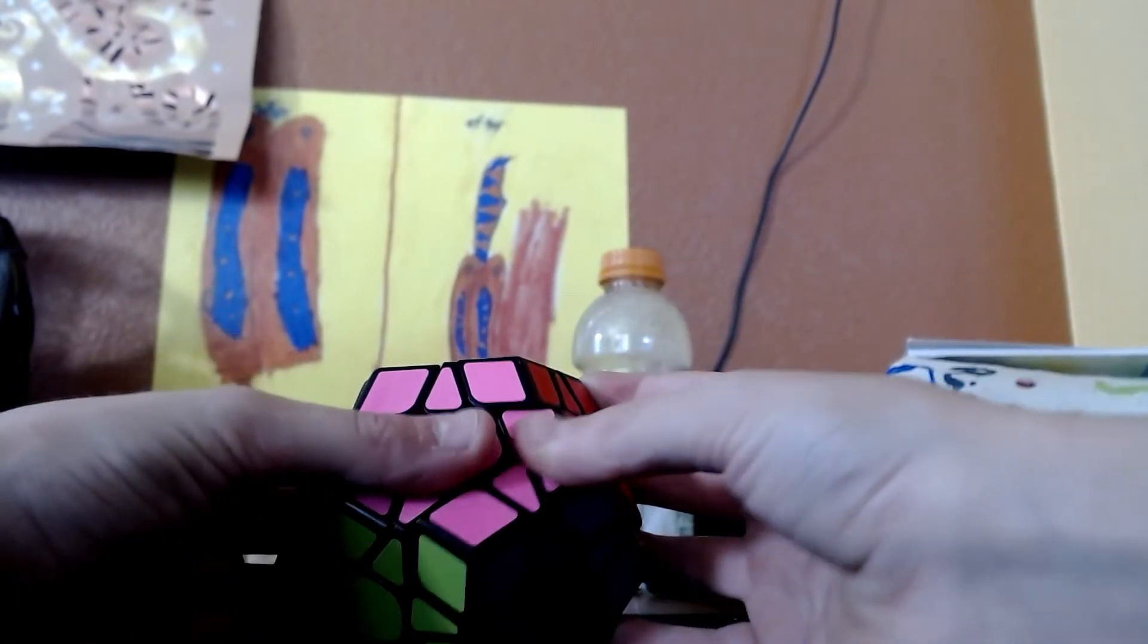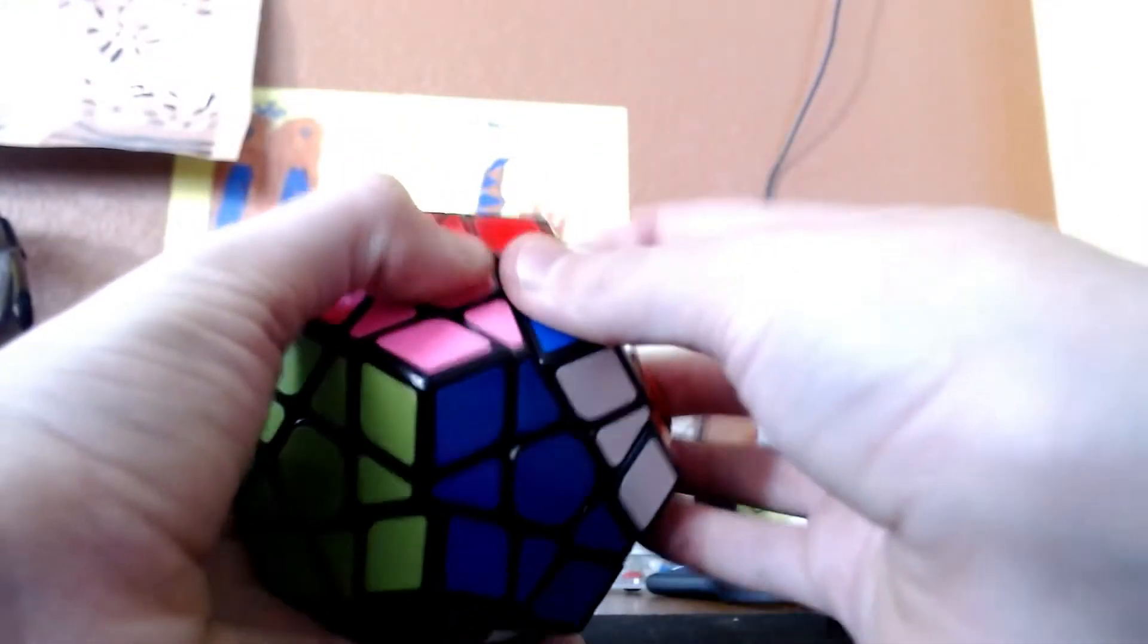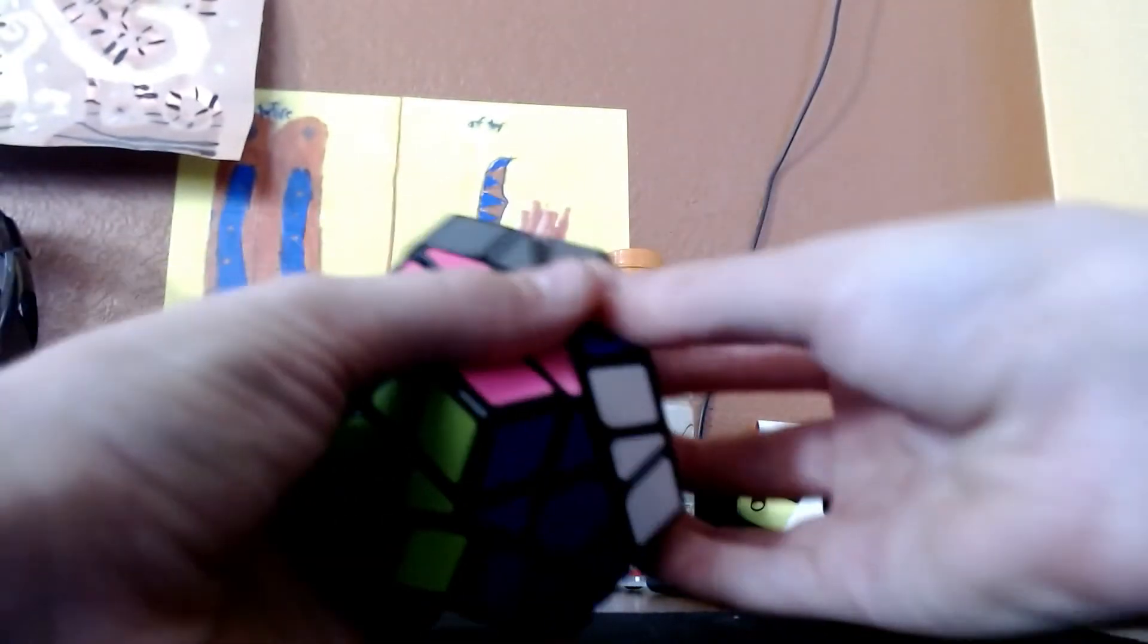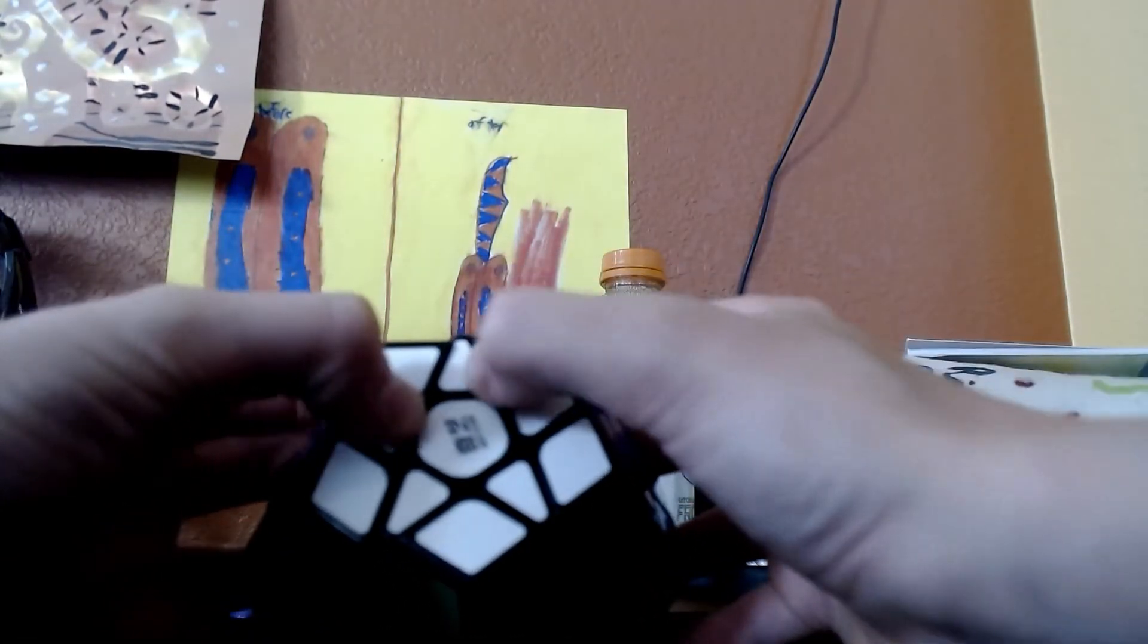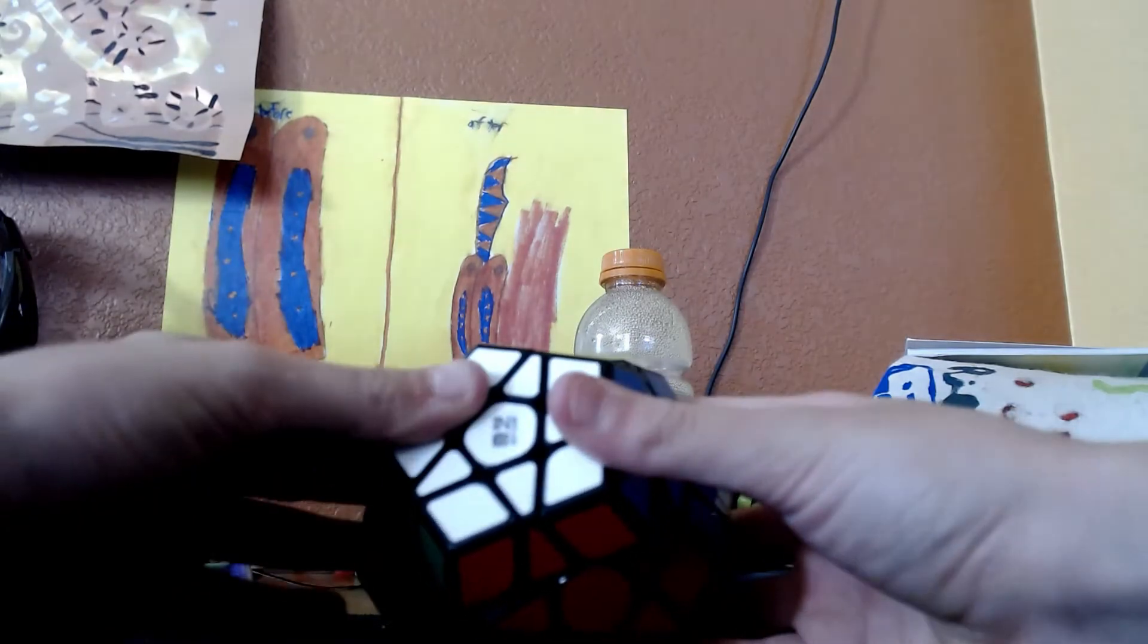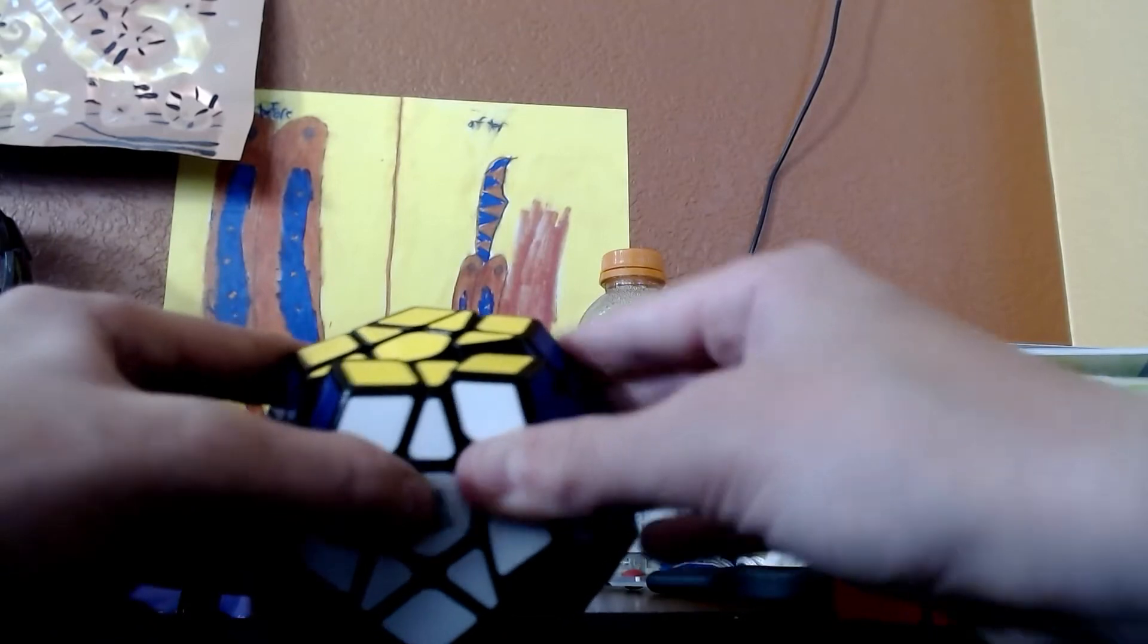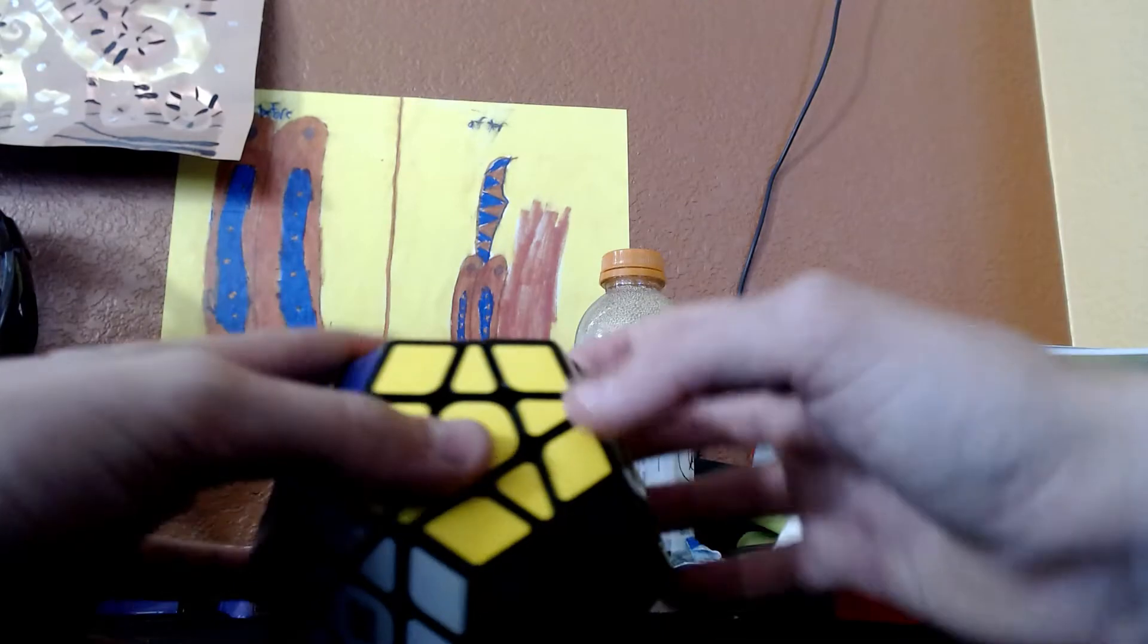Now megaminx. This thing just barely turns, it locks up so much. It is a dodecahedron, but still, you should be able to turn it. It just locks up. You have to turn like every single layer until you can turn that one layer you want to turn.